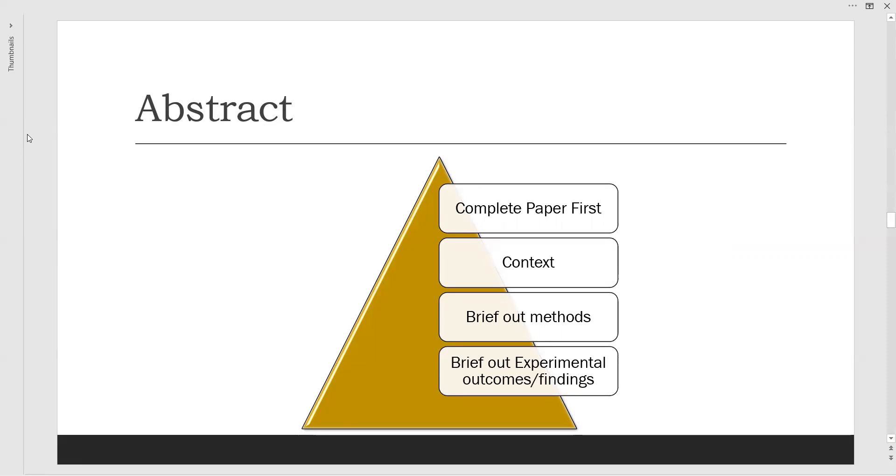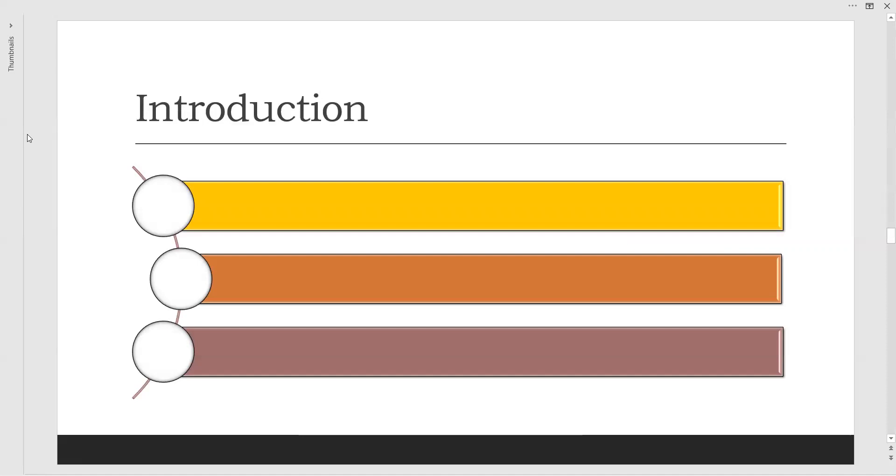After this, let us move to the very first concept of our research paper, that is introduction. In introduction, first of all, we should have a background. The first few lines of introduction must contain the background of the work, like writing what has been happened in the history regarding this work and what are the advancements that have happened, what is the importance, what is the need of the work. These concepts have been mentioned in background.